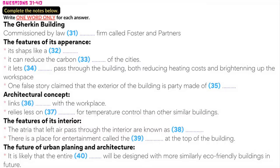While its appearance is the obvious attribute at which to marvel, there is far more to this building than meets the eye. The building helps reduce the city's carbon footprint in a number of ways. In case you're not familiar with the term carbon footprint — think of it as the amount of harmful greenhouse gases given off into the environment by a single person, organisation, or product. Perhaps the most obvious as well as the most significant eco-friendly feature is the glass windows, which allow light to pass through the building, both reducing heating costs and brightening up the workspace.